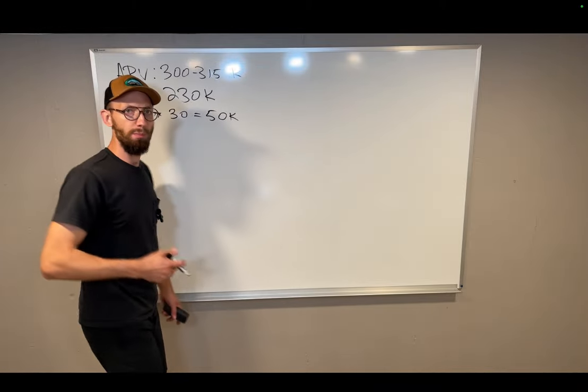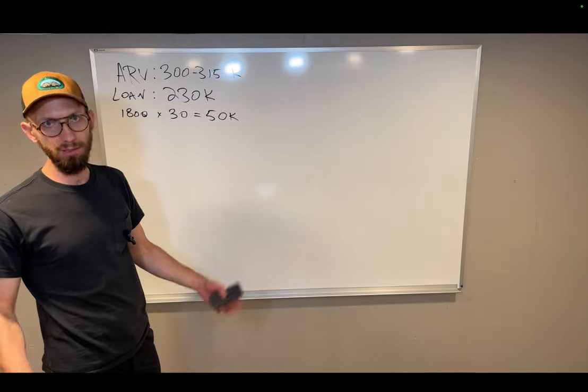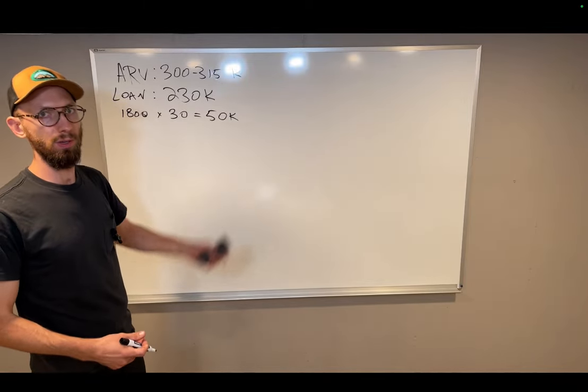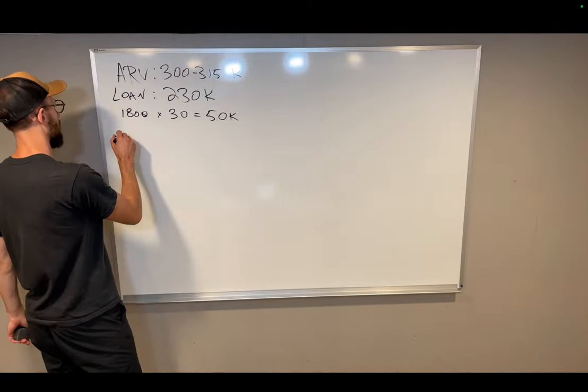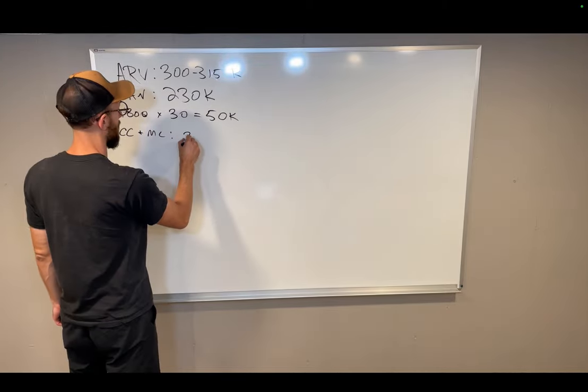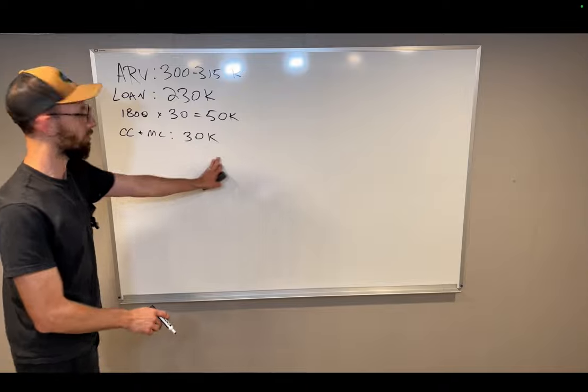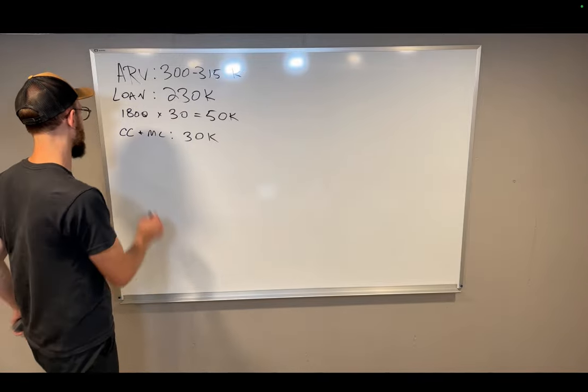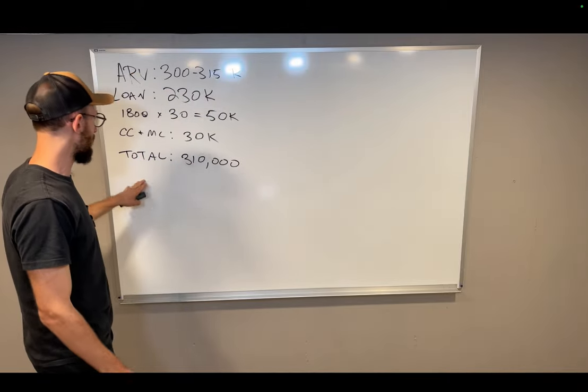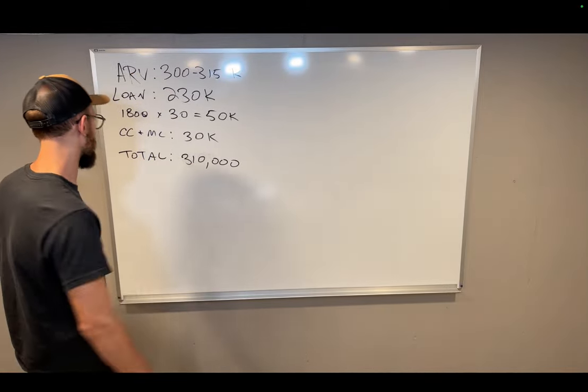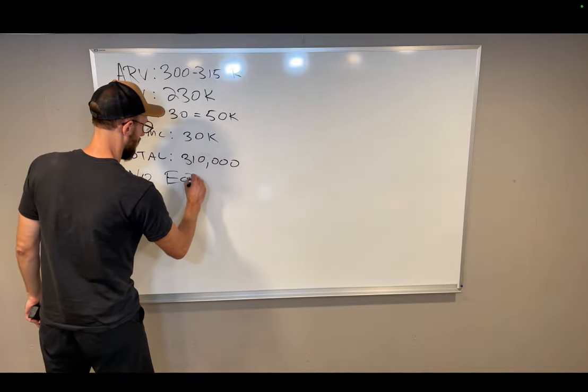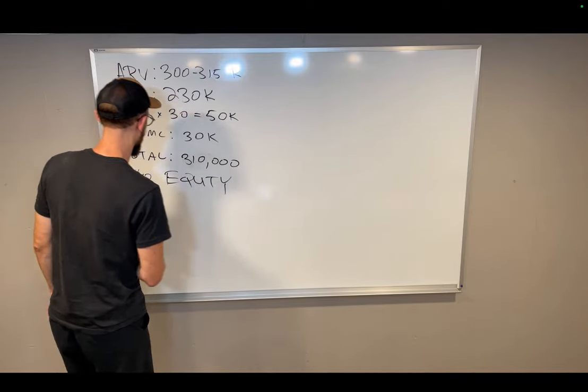And then of course, you're going to have money costs, lending costs for your short-term money, and then costs to sell on the back end when you list it on the market. So we're just going to call it closing costs and money costs about $30,000. So your total all-in on this property, $310,000. So this deal has no equity, guys. No equity on this property.